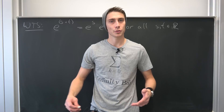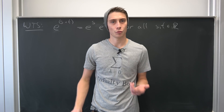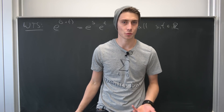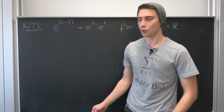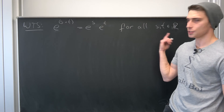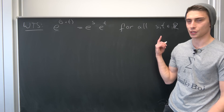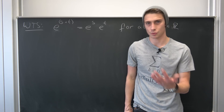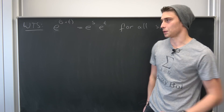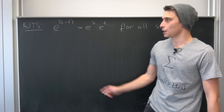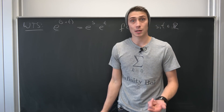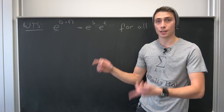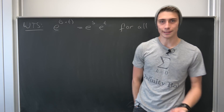We have to remember a lot of calculus one / analysis one stuff. We want to show that for all values s and t out of the real numbers — you can probably also expand this to the complex numbers — we have that e to the s plus t is the same as e to the s times e to the t.